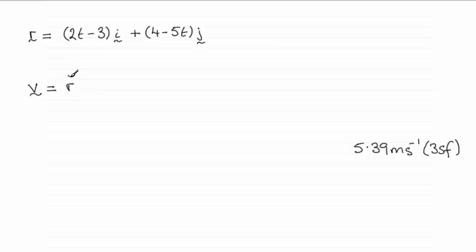Some of you might use R with a dot over the top, or that means the rate of change of the position vector with respect to time, dr by dt.